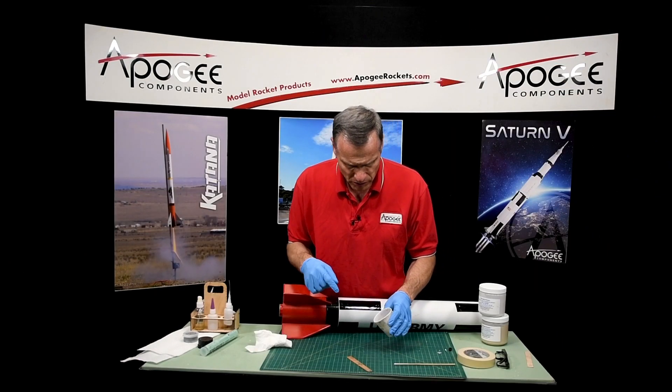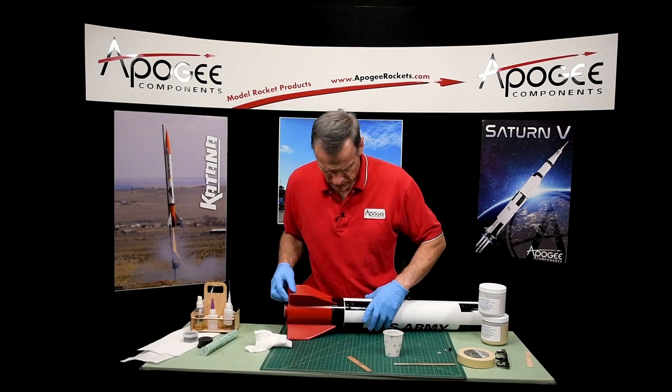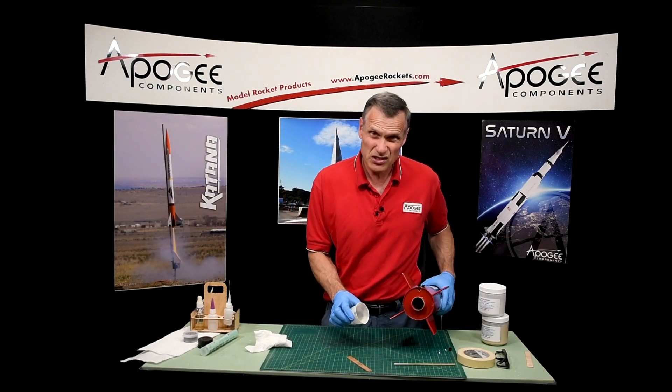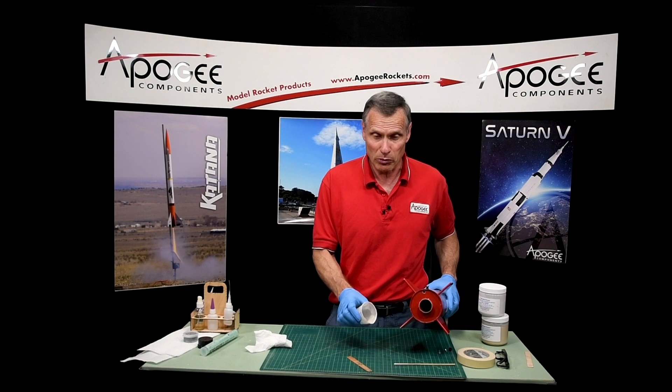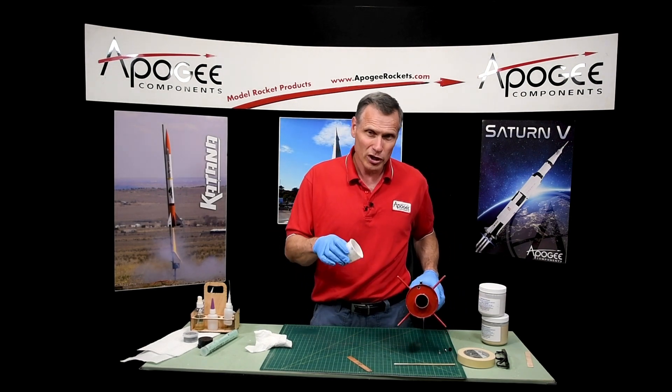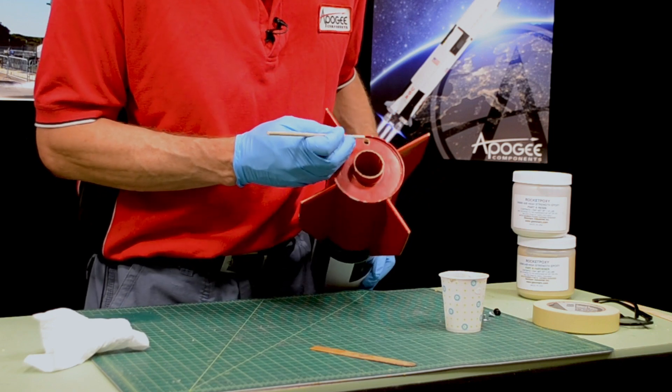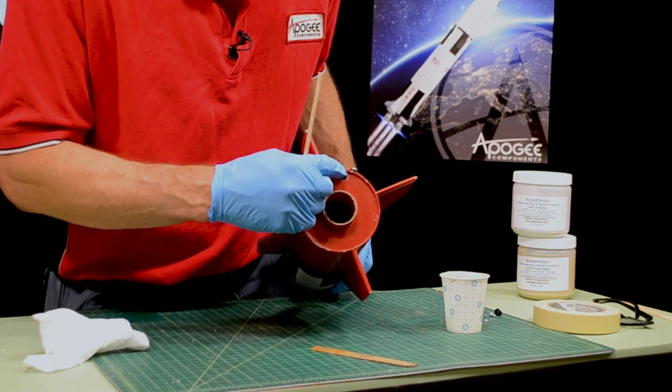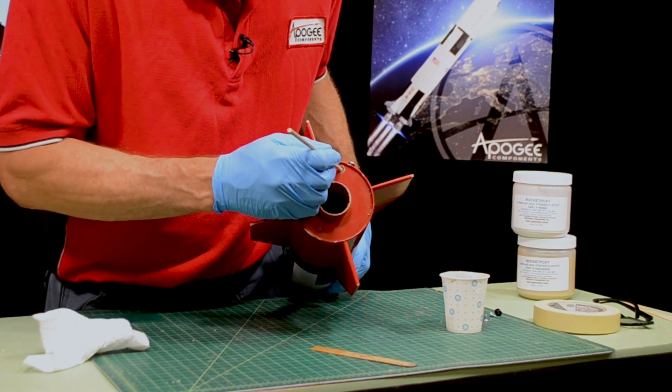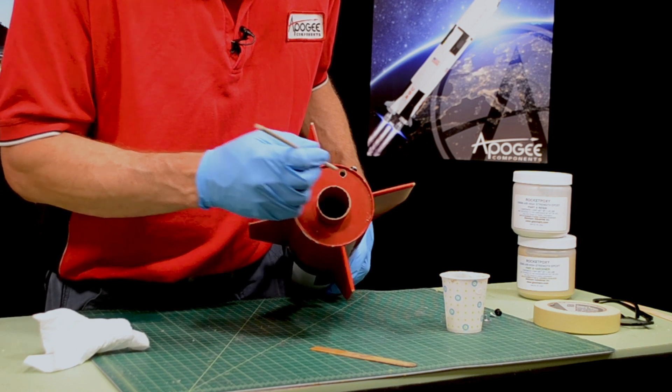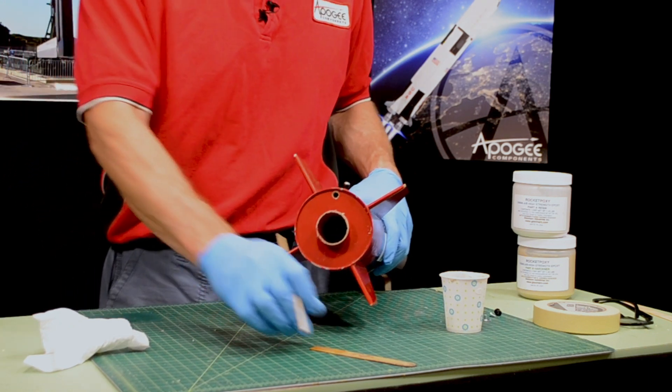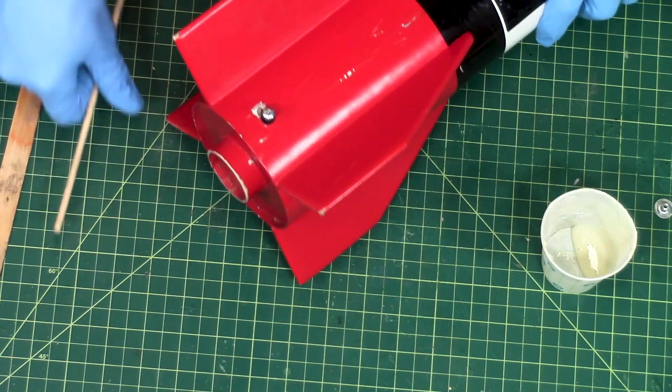Okay, I've mixed up the epoxy, and it has the consistency of warm peanut butter, so it will pour, but it mostly wants to stay where it is. And I'm looking at my hole here, and I'm a little bit off, but that's okay. I can still feel the post from the rail button by sticking this on the inside.